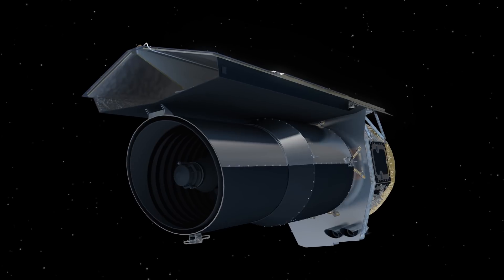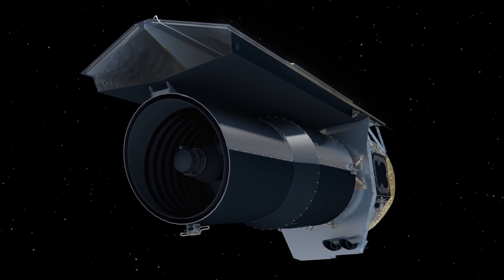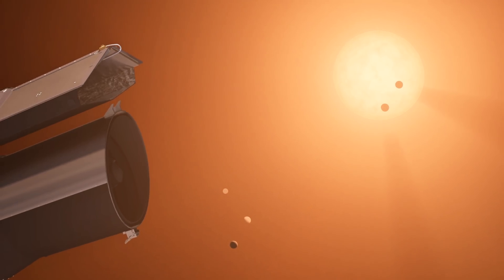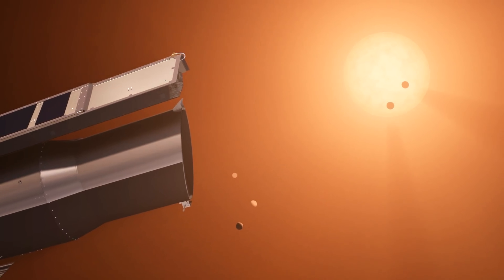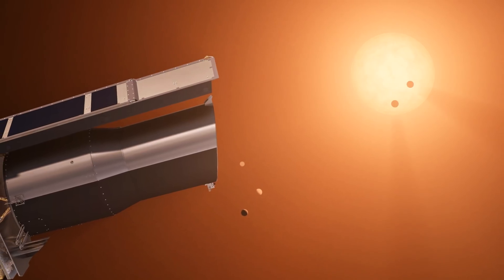Spitzer is particularly sensitive to the infrared glow from ultra-cool dwarf stars like this one. To date, it's devoted over 1,100 hours to accurately measuring the transits and timing for this system alone.